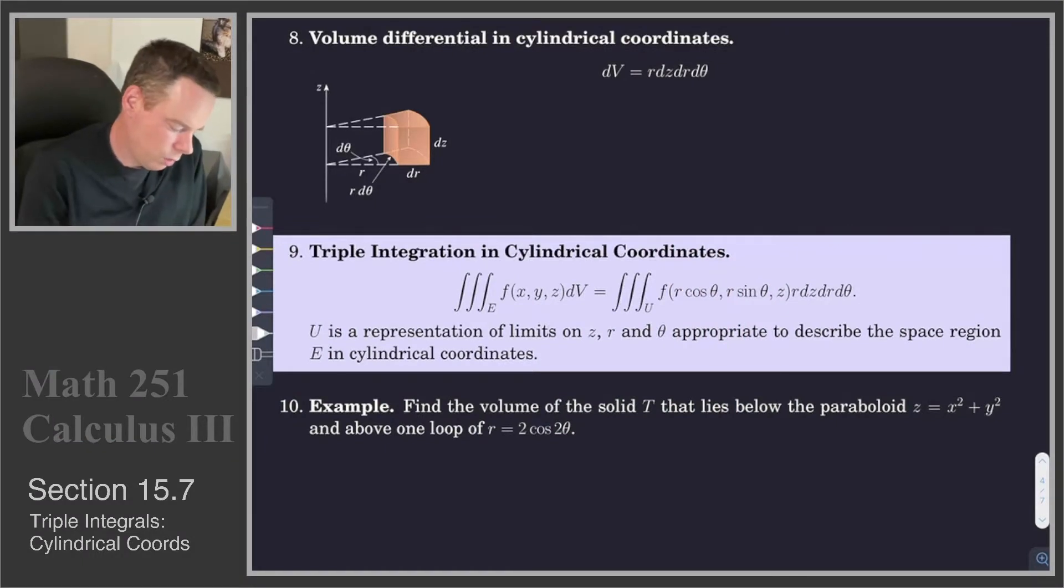We'd like a similar expression for this volume element. How does it depend on DR, D THETA, DZ, and R theta, and Z? This is shown here. The volume element is given by R DZ DR D THETA. We sort of knew this already. It was going to depend on DZ, DR, D THETA, but it also depends on R.